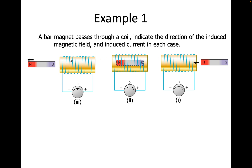Looking at this example: we have a magnet leaving. The field goes into the south and out of the north — I'm only talking about the north side, since that's closest to the coil. The field is going to the left and it's leaving, so it's getting weaker. Therefore my induced B will be to the left as well — same direction. With my thumb pointing to the left, my fingers point up and away, which means my current will be going upward. When the magnet is in the middle and stationary, there is no movement, so there is no induced field — nothing at all.